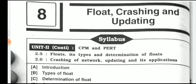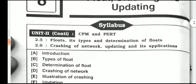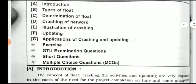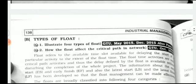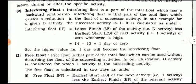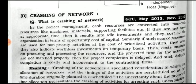Hello, good morning. In the Industrial Management subject, we are discussing float, CPM, and PERT charts. After float, crashing and updating. We discussed CPM and PERT chart previously. So let's continue — the first topic is types of float, which was asked as a GQ question: illustrate four types of float, then critical path method and network diagrams.